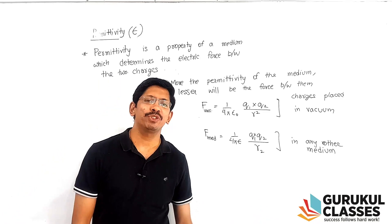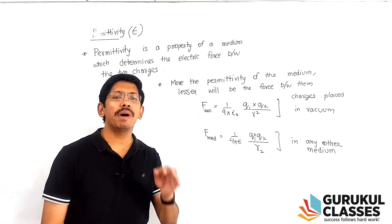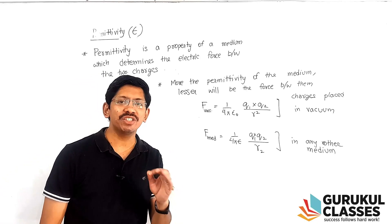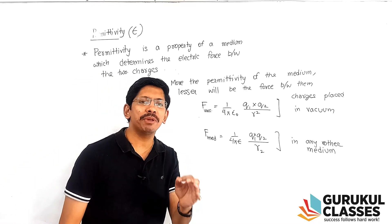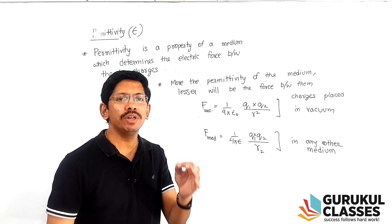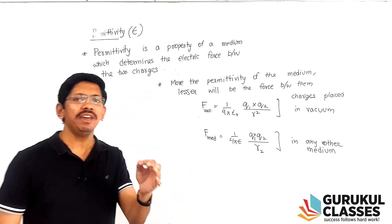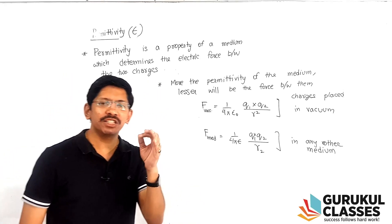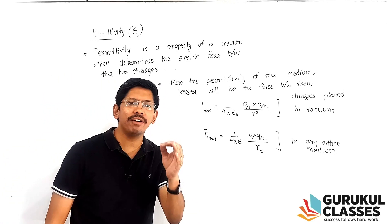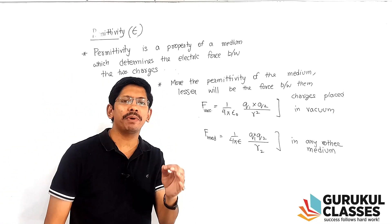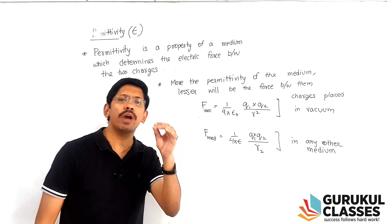Hello boys. In this part, we will study permittivity. Like in the last part, I have given you a story box in which there is a constant of proportionality, one among four by epsilon naught.